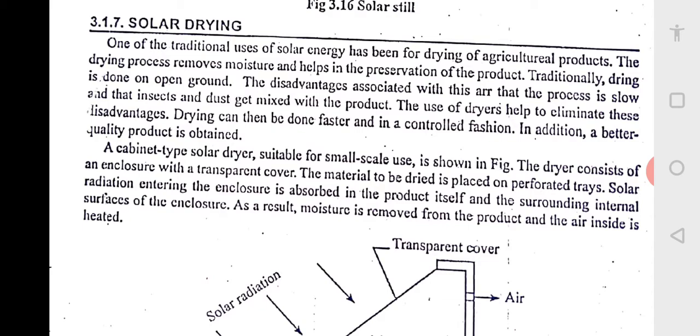So the moisture is removed. How to do this? One thing is on the rooftop only, you can spread the agriculture produce or fruits on the rooftops, but they have got certain inherent disadvantages. To improve the quality of drying, there is something called solar drying.